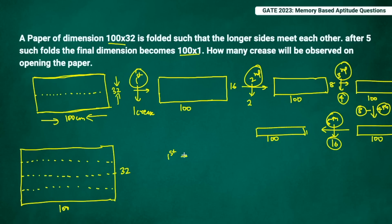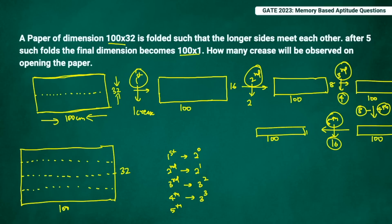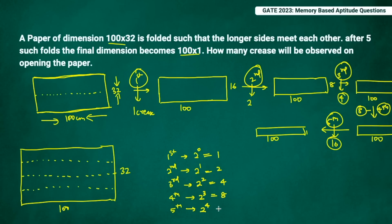This can be summarized mathematically: for the first fold, creases = 2⁰ = 1; second fold = 2¹ = 2; third fold = 2² = 4; fourth fold = 2³ = 8; fifth fold = 2⁴ = 16. Adding all of them: 1 + 2 + 4 + 8 + 16 = 31. So 31 creases is the correct answer for this question.